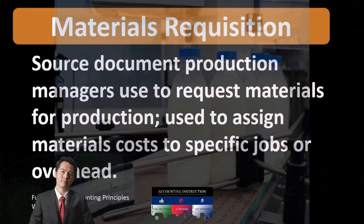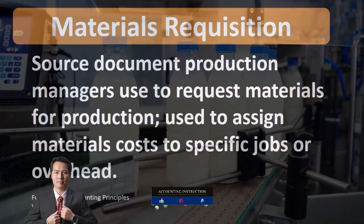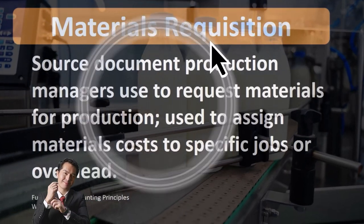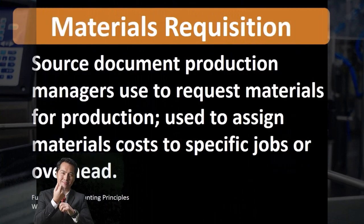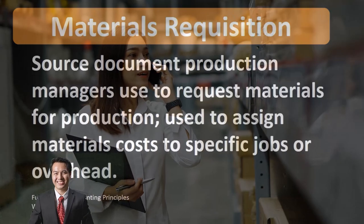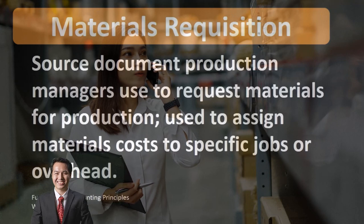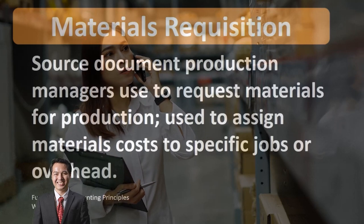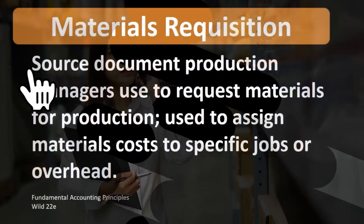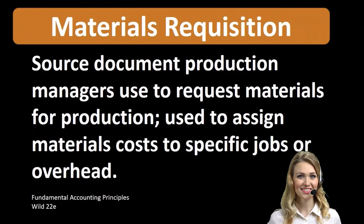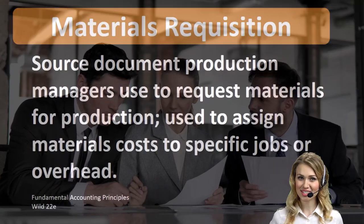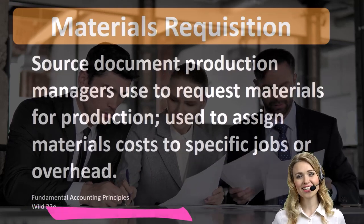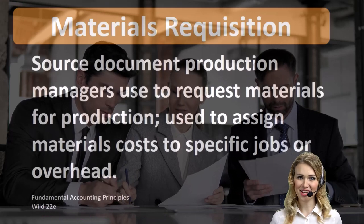Those raw materials are going to need to be transferred and moved to the production process. As that happens, the materials requisition form is a form used to track that process — to help record that transfer from raw materials inventory to work in process, in a similar way as recording something like sales is done through the form of an invoice.